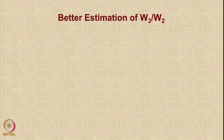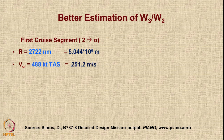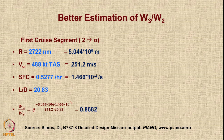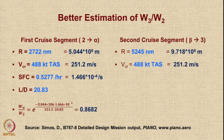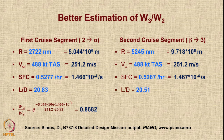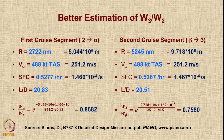For better estimation of the cruise fuel fraction, there are two segments. In the first cruise from segment 2 to alpha, the range is 2,722 nautical miles at 488 knots TAS, giving W_alpha/W2 = 0.8682. In the second cruise from beta to segment 3, the range is 5,245 nautical miles with slightly different SFC and L/D (aircraft is lighter), giving W3/W_beta = 0.7580. Multiplying these two gives a better estimate of the total cruise weight fraction.